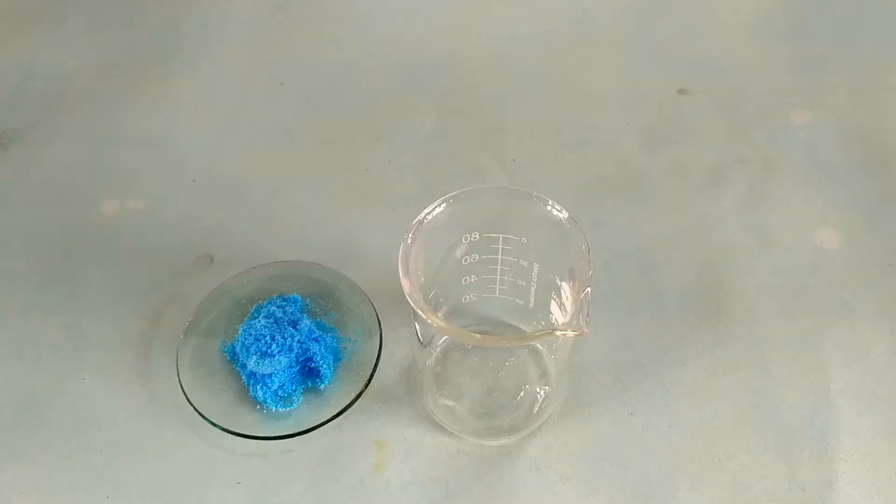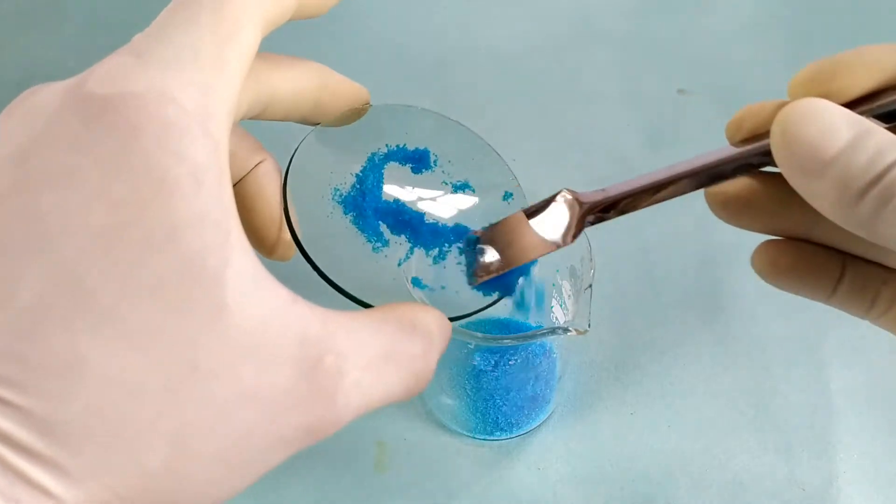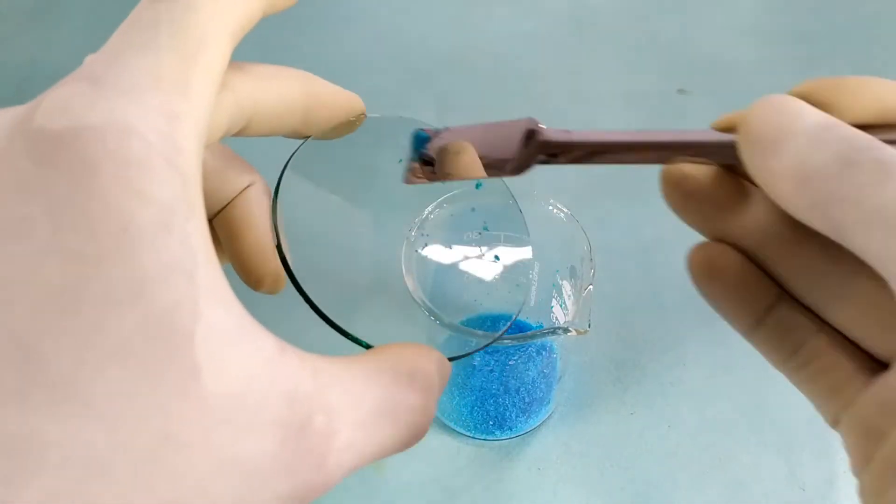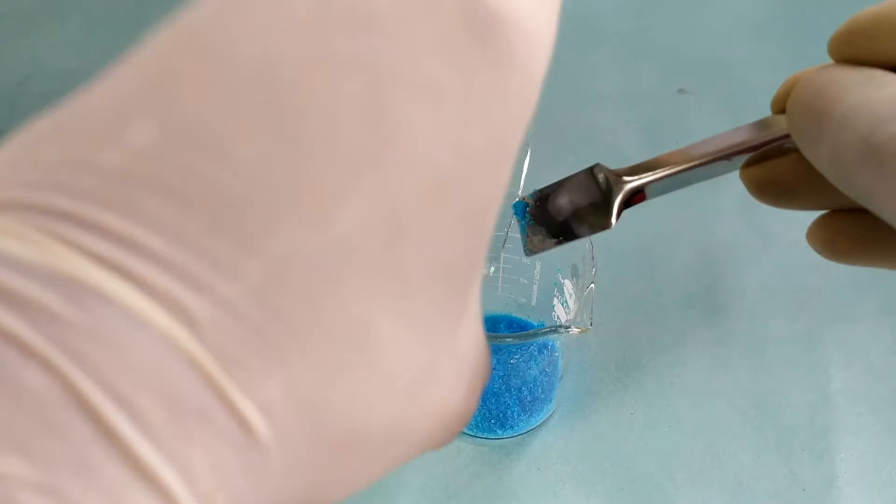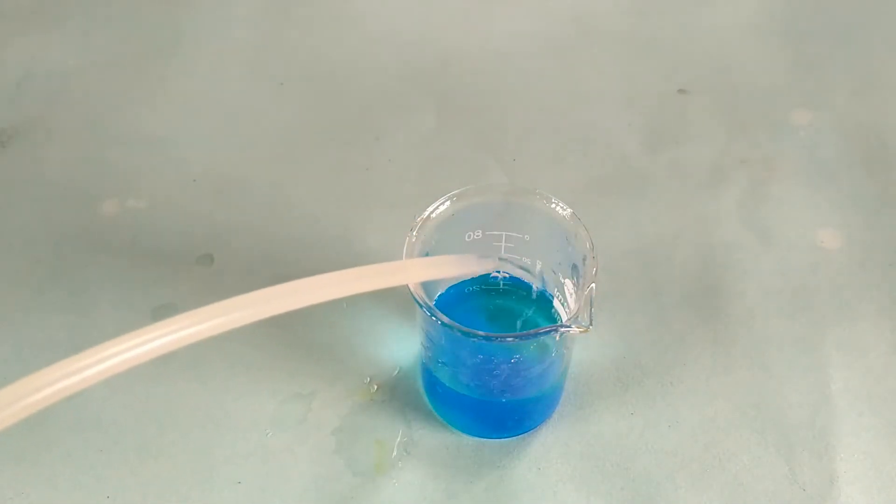To prepare Fehling's reagent-A, weigh 7 grams of copper sulfate pentahydrate using an analytical weighing scale. Transfer the salt into a beaker and rinse the spatula using a small amount of distilled water.